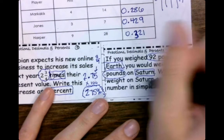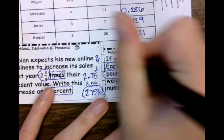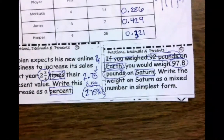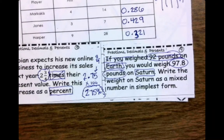So write the weight on Saturn as a mixed number. We don't actually need anything to do with Earth, right? We just need to worry about the 97.8.